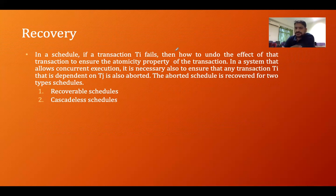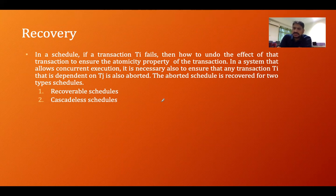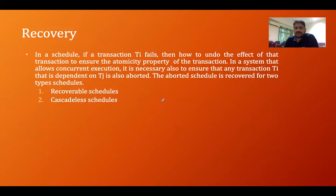There are many transactions that may fail at any point of time. What we have to do is roll back that transaction to some instance. Rolling back is not a setback to the system — it is actually the recovery of the system, recovery from the failure. How we can recover from the failure will be decided by the recovery process. If a transaction Ti fails in a schedule, we need to undo the effect of that transaction to ensure the atomicity property.